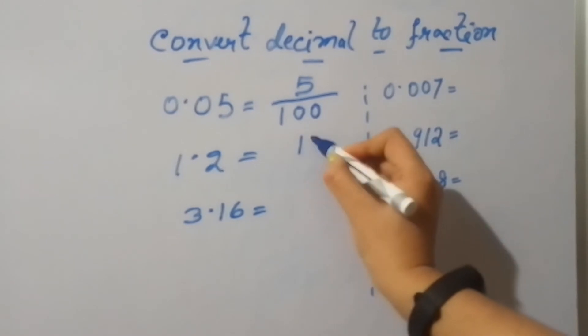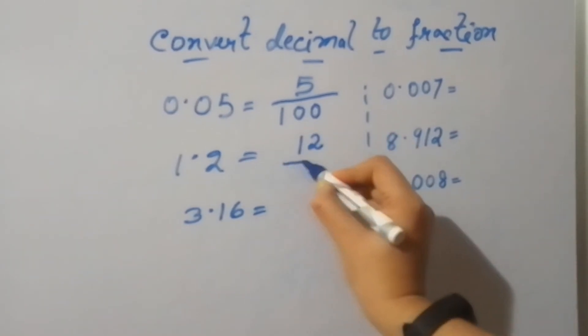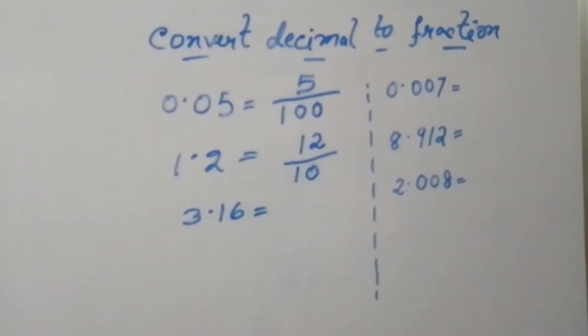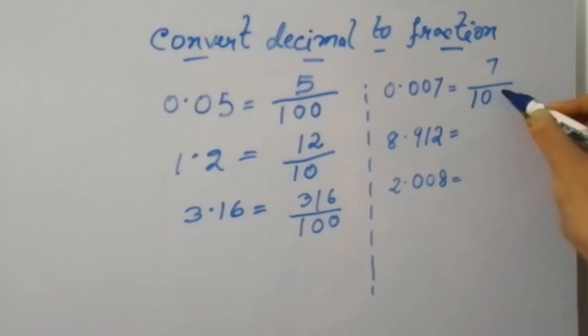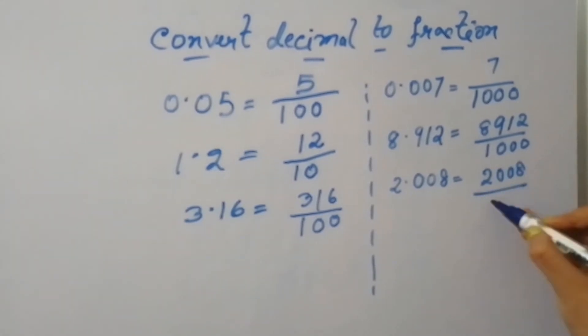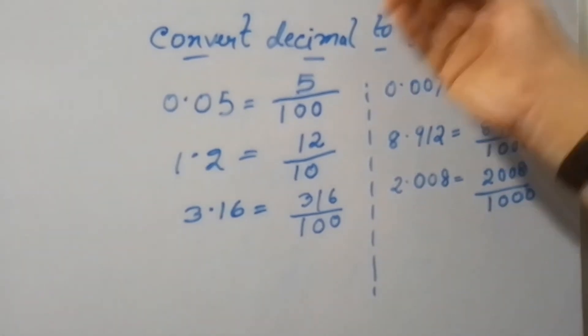This is how the rest of the answers will be: 12 by 10, 316 by 100, 7 by 1000, 8912 by 1000, and 2008 by 1000. This is how we have to convert decimals into fractions.